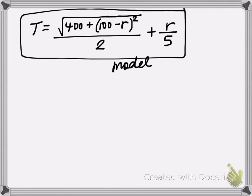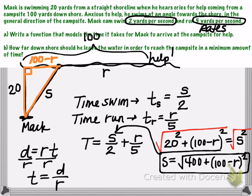This is our function that relates R and T. Remember, R is the distance that he runs and T is our total time. If you wanted to use function notation, you could say we've written T as a function of R. This would be T of R, which is the answer to part A. Write a function that models the time it takes for Mac to arrive at the campsite.